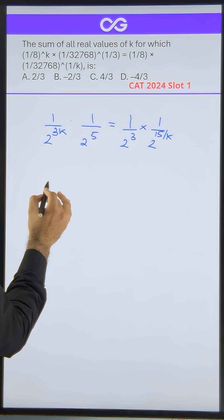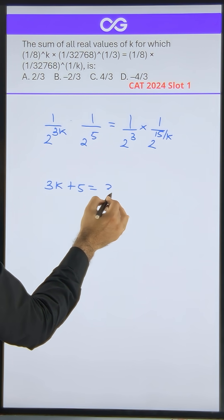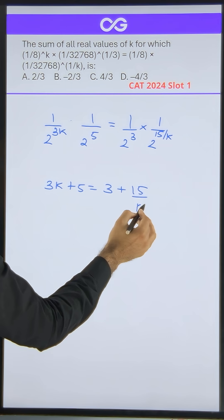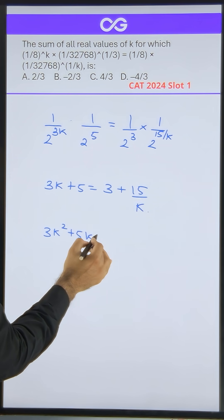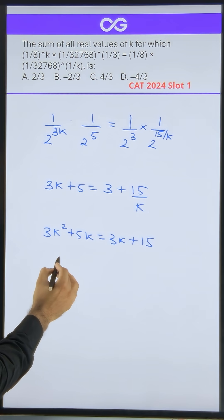Basis, I can add powers. So I can directly write 3k plus 5 should be equal to 3 plus 15 by k. Cross multiply.